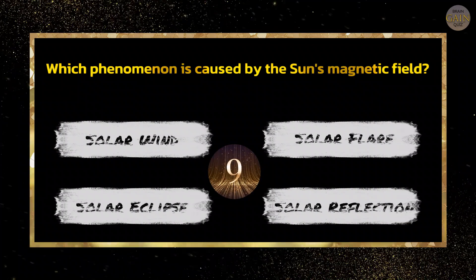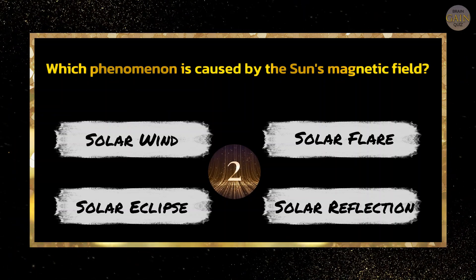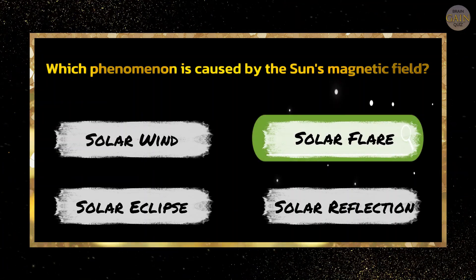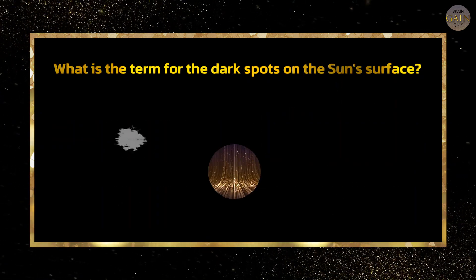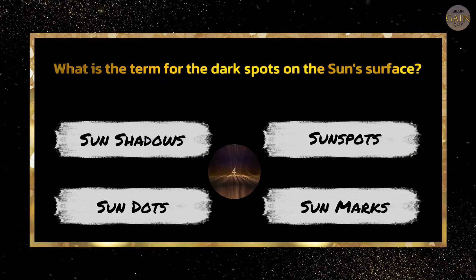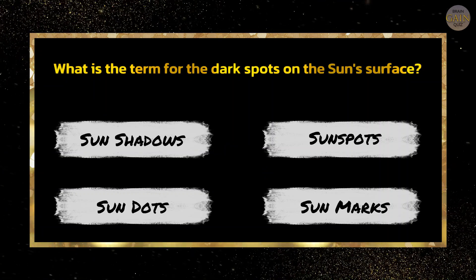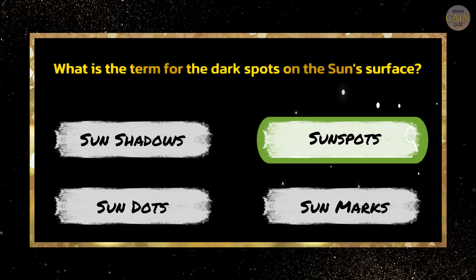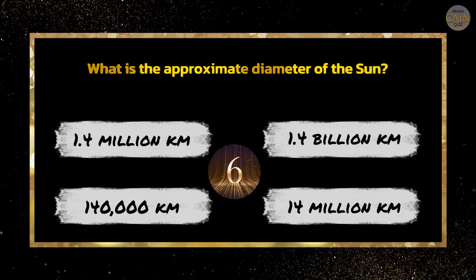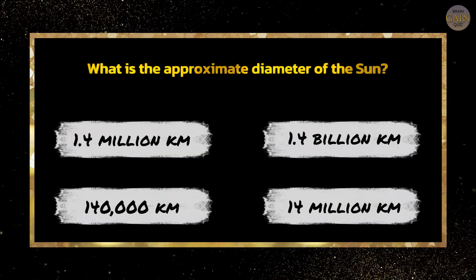Which phenomenon is caused by the Sun's magnetic field? Solar flare. What is the term for the dark spots on the Sun's surface? What is the approximate diameter of the Sun? 1.4 million km.